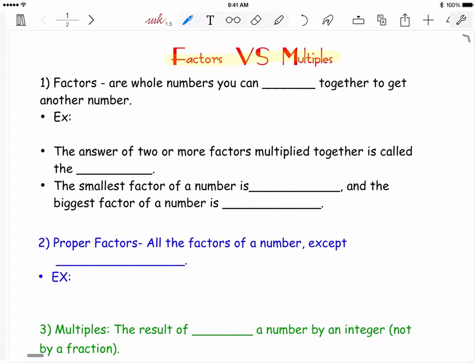The first word is factors, which are whole numbers that you can multiply together to get another number. For example, the number 12 has the following factors: 1, 2, 3, 4, 6, and 12. Because 1 times 12 is 12, 2 times 6 is 12, and 3 times 4 is 12 as well.